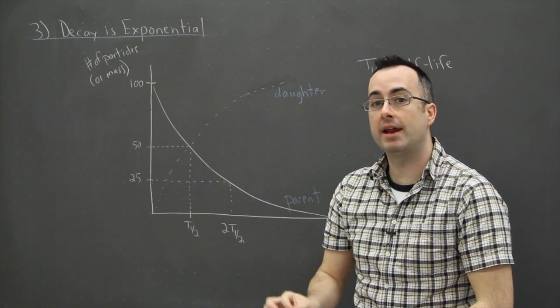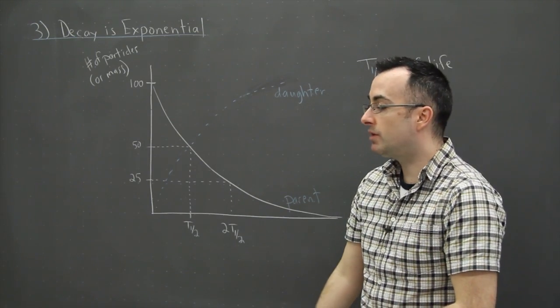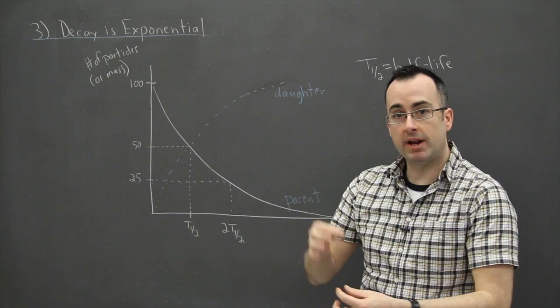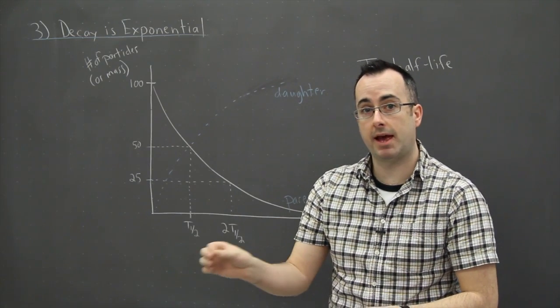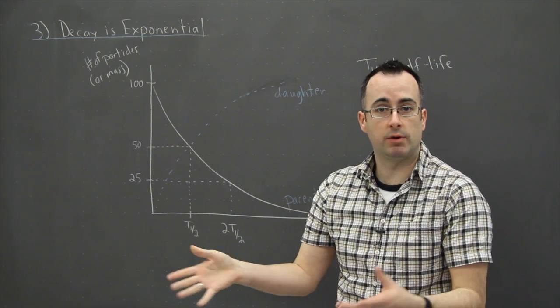Another important thing is that it's a random process. So that means you can't know exactly when it's going to happen. You can look at the probability of it happening, but you never know exactly when it's going to happen.